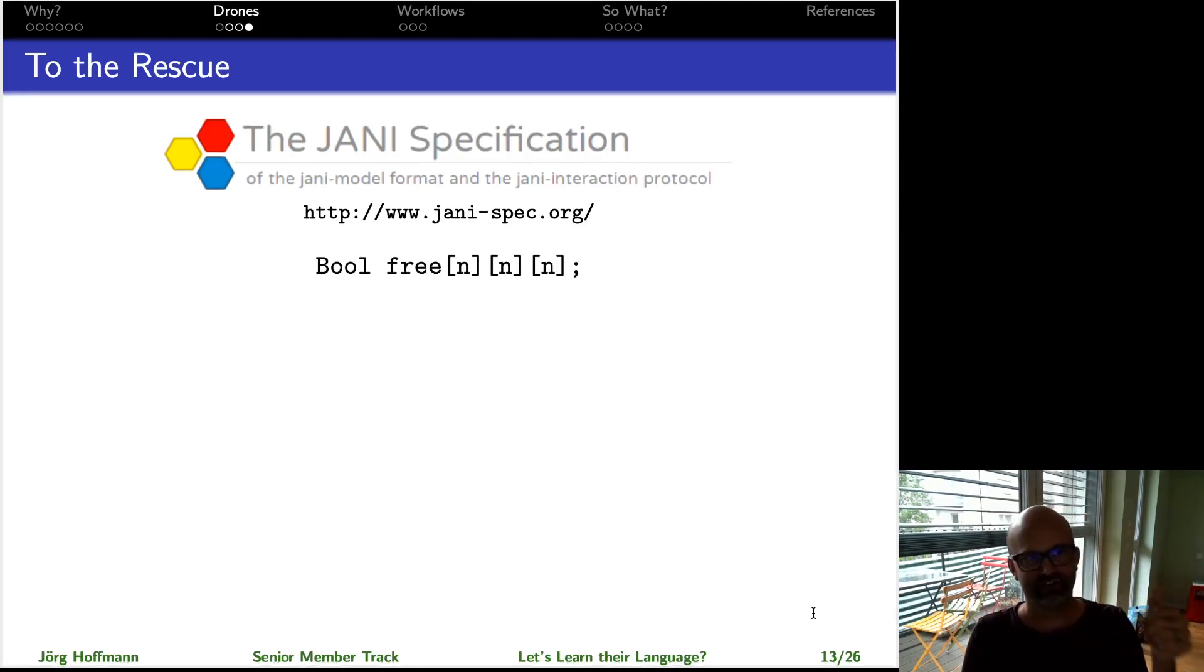Fact number one, lo and behold, there is an array. If you want to specify in a discrete 3D world, in a finite discrete 3D world, which positions are free, then every one of us would just write a Boolean array into the code. Planning languages don't allow us to do that, because for some reason that nobody can remember, we are specifying everything in logics. In model checking languages, the tradition is software abstraction, and so data structures are quite natural. And having simple data structures can be very useful also for planning purposes.